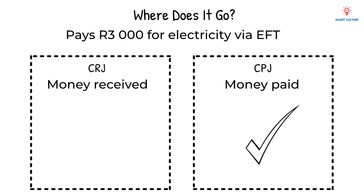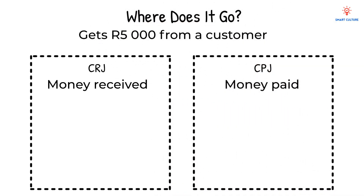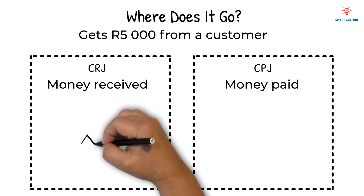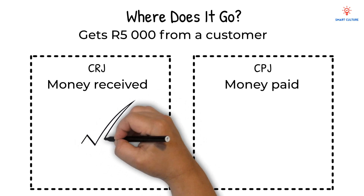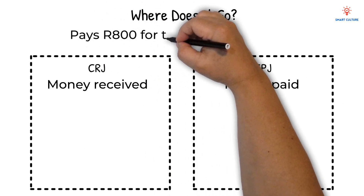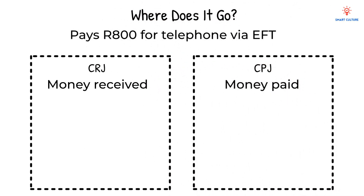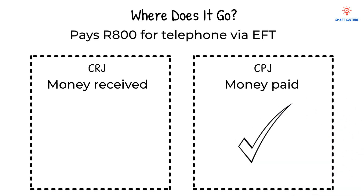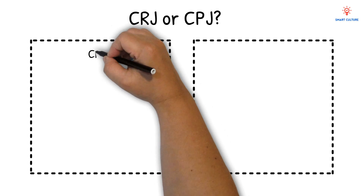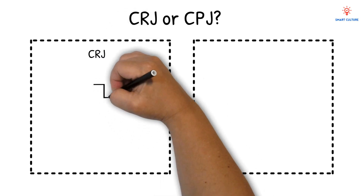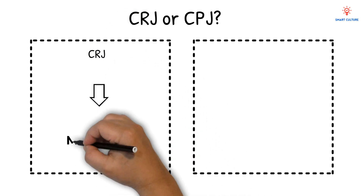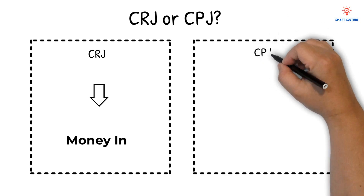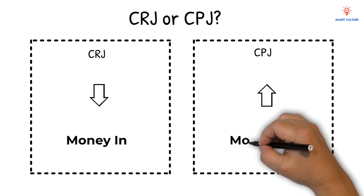In the third transaction, the business gets 5,000 Rand from a customer. Money comes into the business and therefore will be recorded in the CRJ. And lastly, a telephone bill for 800 Rand is paid via EFT. This is money leaving the business and therefore it will be recorded in the CPJ. Always remember: if money comes into the business, then we use the CRJ. But if money goes out, we use the CPJ.